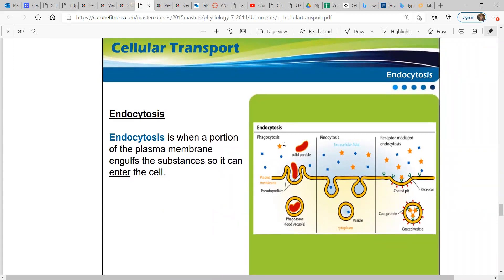Here's the phagocytosis. We have a solid particle outside of the cell. Then the plasma membrane comes up, surrounds it, brings it into the cell, and now it's a phagosome or a food vacuole. Then we have pinocytosis and then receptor-mediated endocytosis.